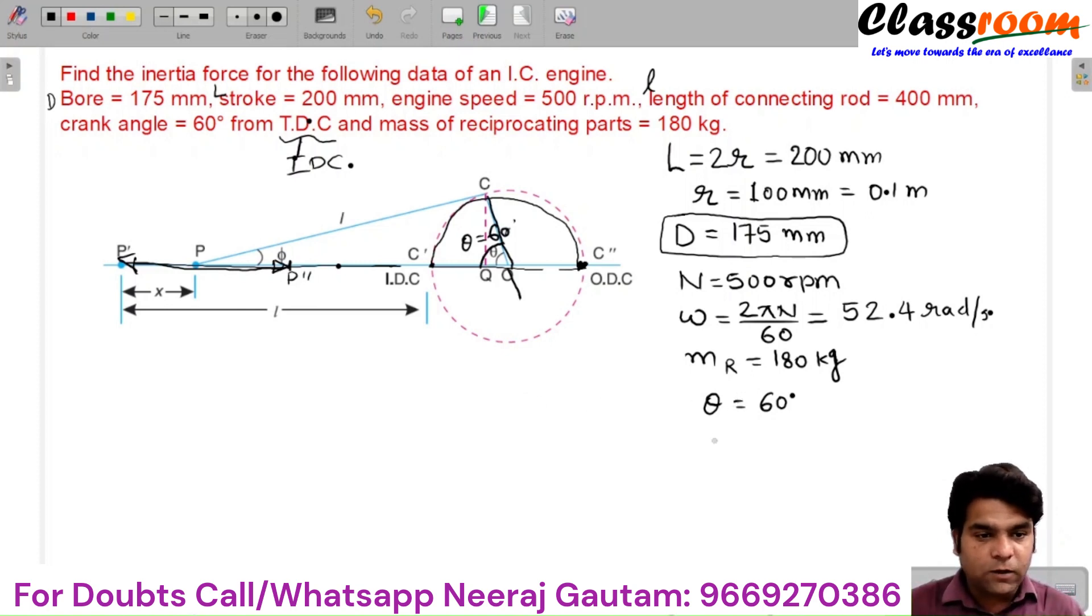Now, the connecting rod length L small is given as 400 mm. So we can determine the L by R ratio, that is length of connecting rod to the length of crank, which is 400 by 100, that is 4.